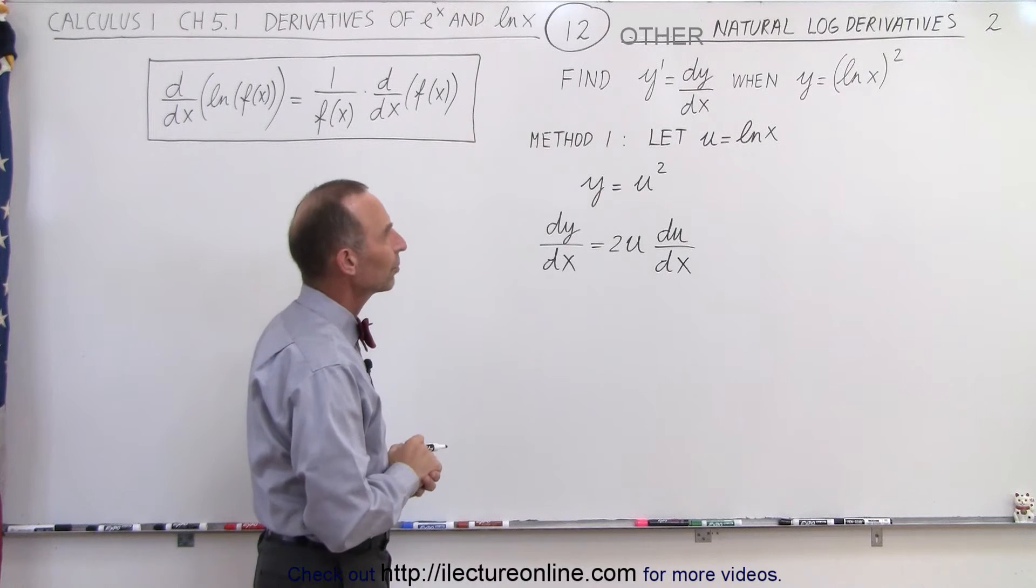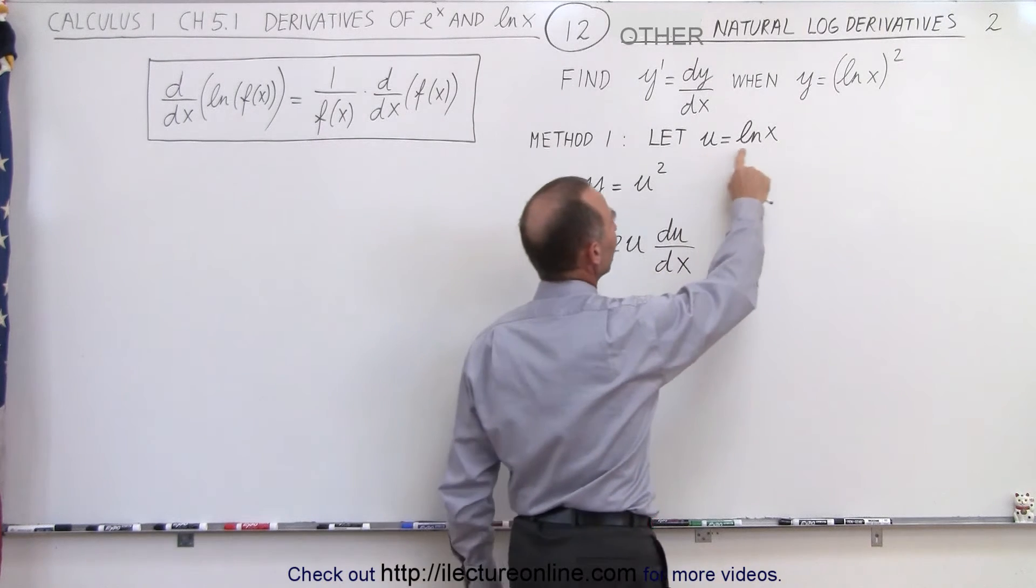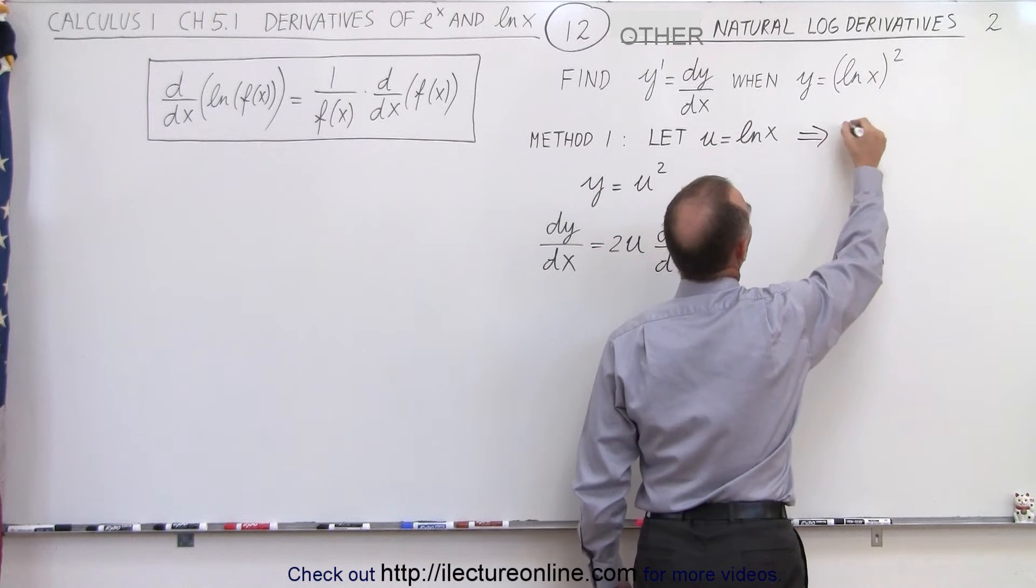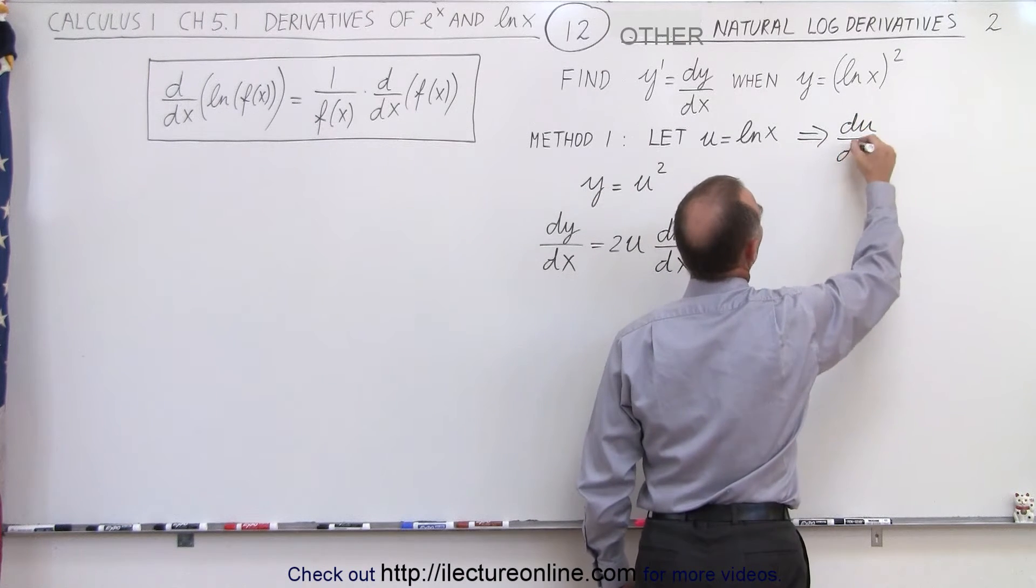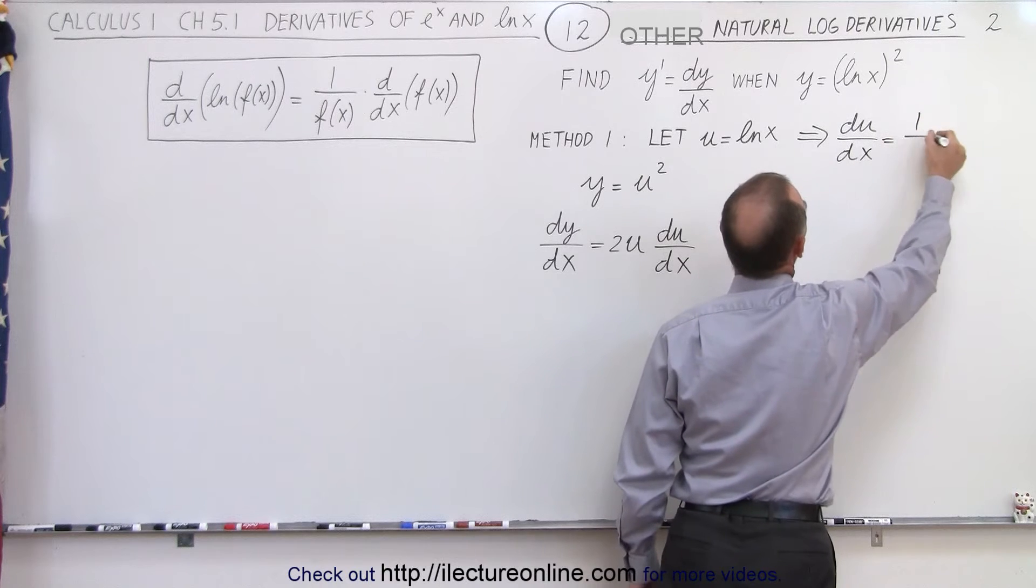Now, du dx, well, if u is equal to natural log of x, that means from here that du dx must be equal to 1 over x.